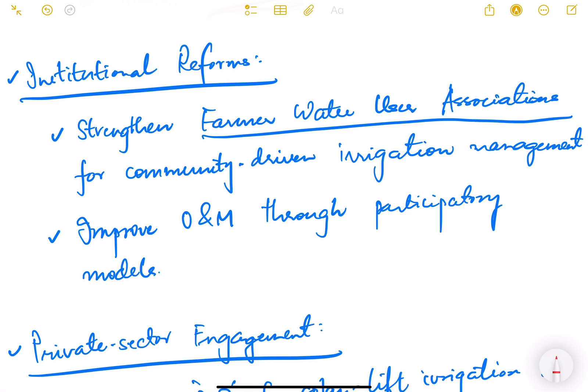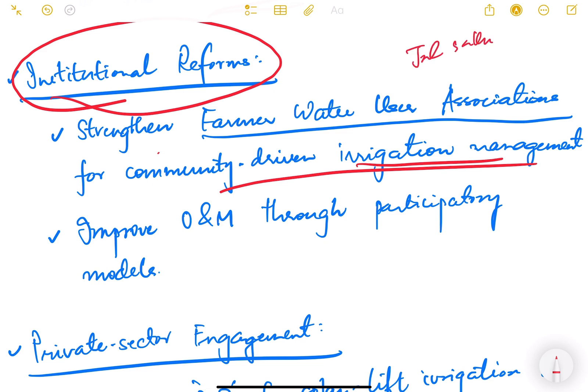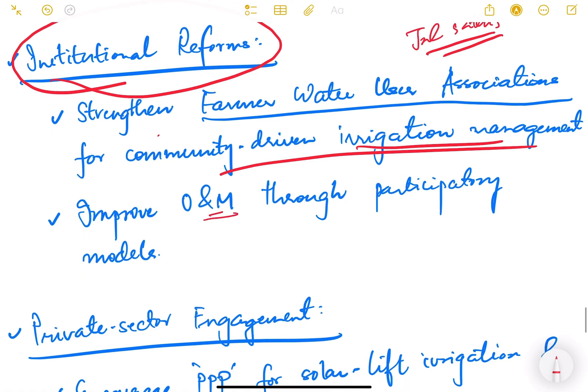There need to be some institutional reforms also. Strengthen the farmer water user associations for community driven irrigation management. There are jalsathis and these kind of organizations at village level, at the gram panchayat level. Pani panchayats, these institutions need to be strengthened and given more power so that they can manage the water well. Improve operation and maintenance through participatory models, very important.